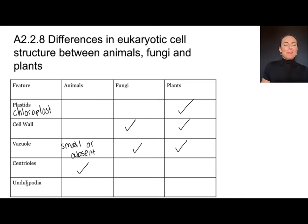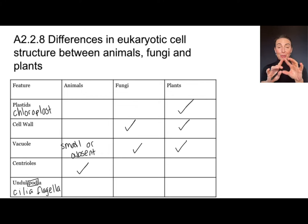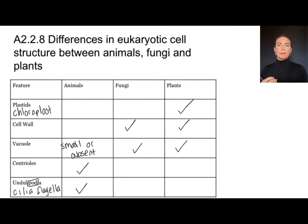Undulipodia — I like to focus on the word 'pod,' meaning foot — these are things that help with movement, like cilia or flagella. We looked at those in paramecium and Chlamydomonas, but here we're talking about multicellular organisms. Animals, plants, and fungi are mostly multicellular, and we want to associate undulipodia with animal cells — we won't find those movement-type structures on fungi or plants.